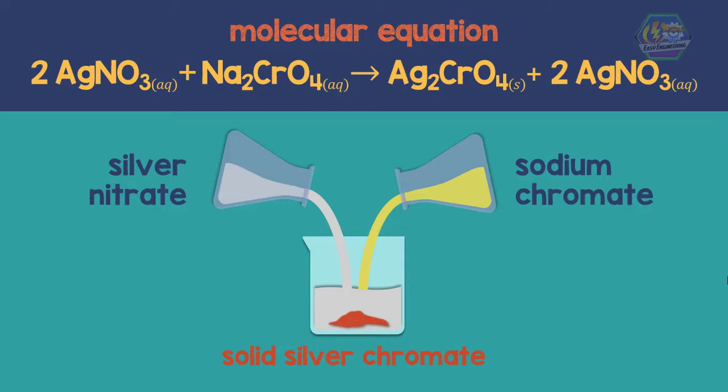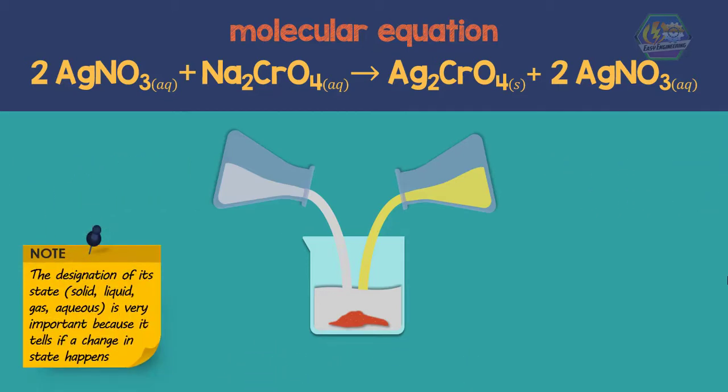This kind of equation tells us all the species that are in solution. The designation of its state, like solid, liquid, gas, and aqueous, is very important here because it tells us that if there is a change in state, then precipitation happened. Just like in the equation above, the reactants are both in aqueous solution that yields a solid product, hence precipitation occurs.